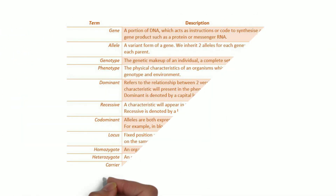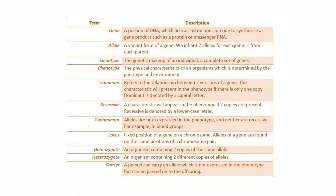Here are some key terms for this part of the course. Gene: this is a portion of DNA which acts as instructions or code to synthesize a gene product such as a protein or messenger RNA. Allele is a variant form of a gene. We inherit two alleles for each gene, one from each parent.